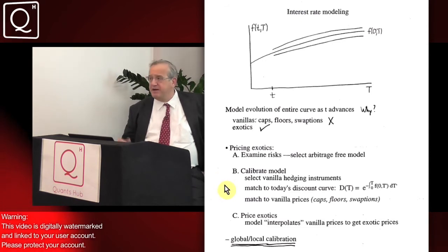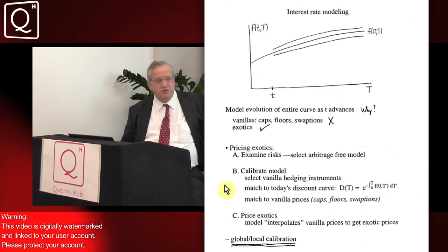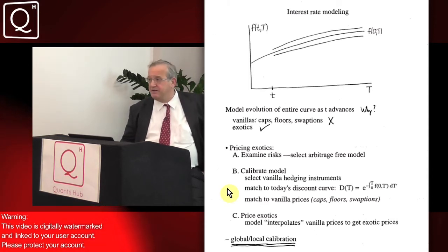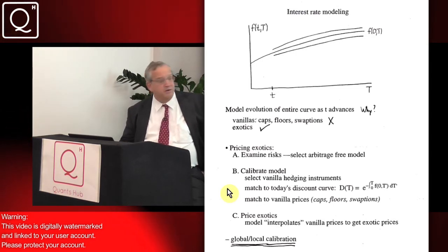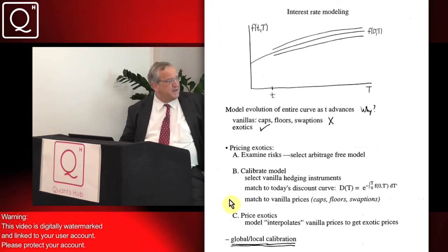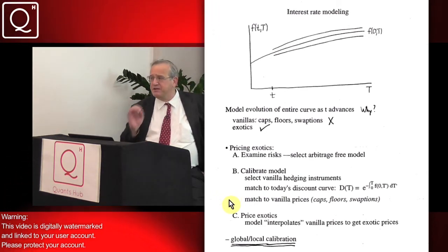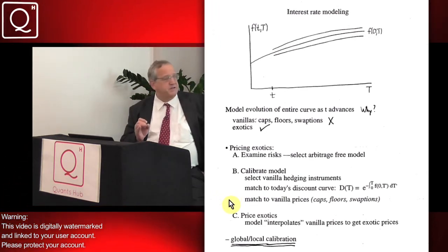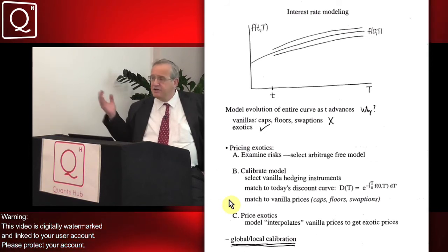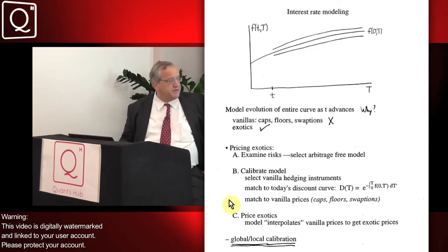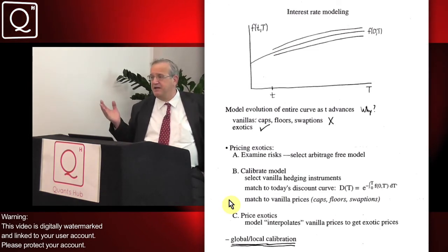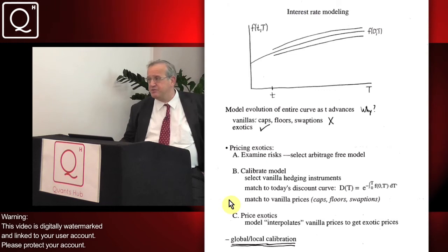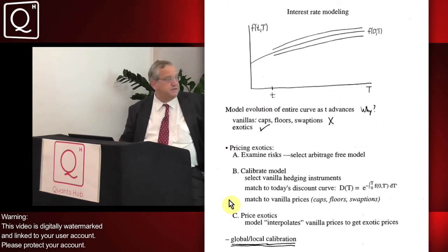Then you choose the mathematical parameters in the model to do two things. First is to match today's discount curve essentially exactly, because there's no excuse to get it wrong and you're toast if you do get it wrong. And the second thing is to match the predicted model prices, the theoretical prices of these calibration instruments, to their market prices. You do that either two ways: either you can match them exactly, or if you have lots of calibration instruments, you might try to match in some least squares sense.